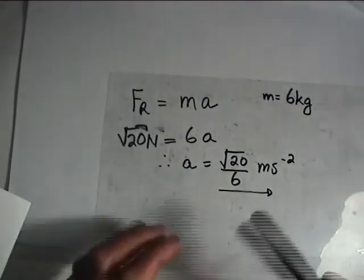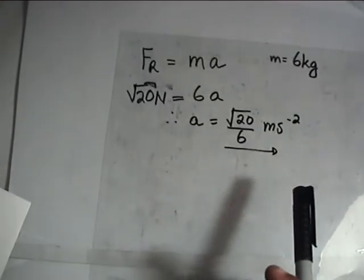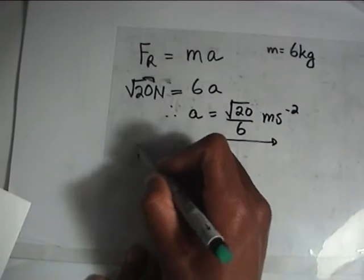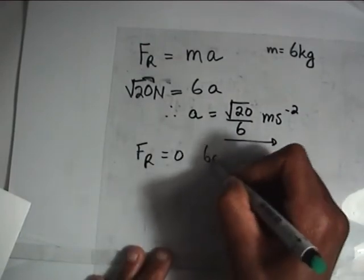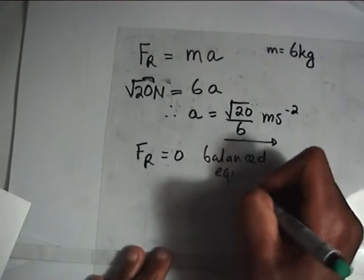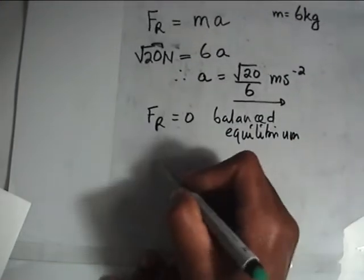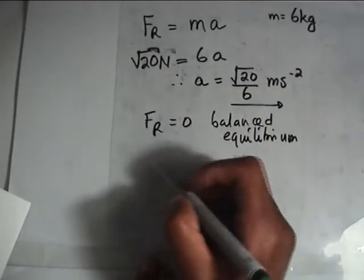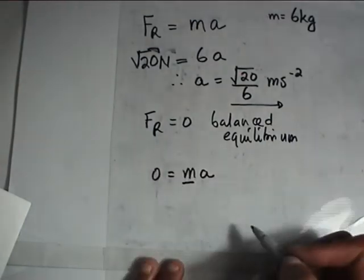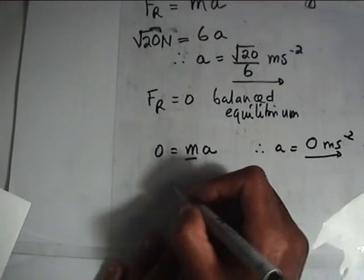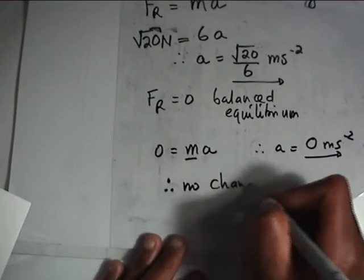This is in the case where there is no equilibrium — when the forces are unbalanced. When there is no acceleration, there is no change in the state of rest, because our resultant force will be equal to zero — the forces are balanced. When there is equilibrium, the forces are balanced and there is no resultant force, so F = ma becomes 0 = ma, meaning acceleration is 0 meters per second squared.